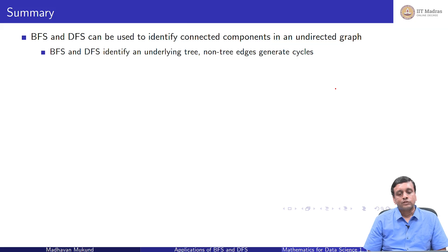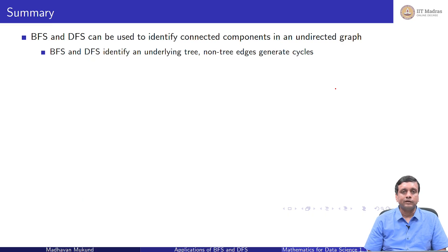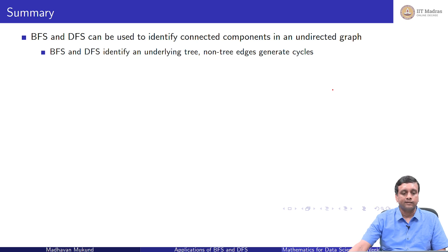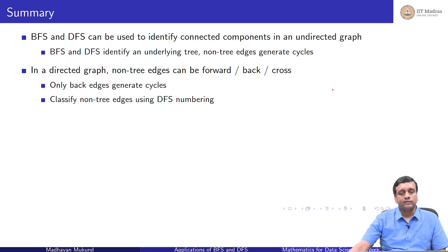To summarize: BFS and DFS are primary strategies for reachability in a graph, but we can do much more. We can identify connected components in an undirected graph. DFS uncovers a tree, and any edge outside this tree must form a cycle with the tree edges. So any non-tree edge in an undirected graph means there is definitely a cycle.